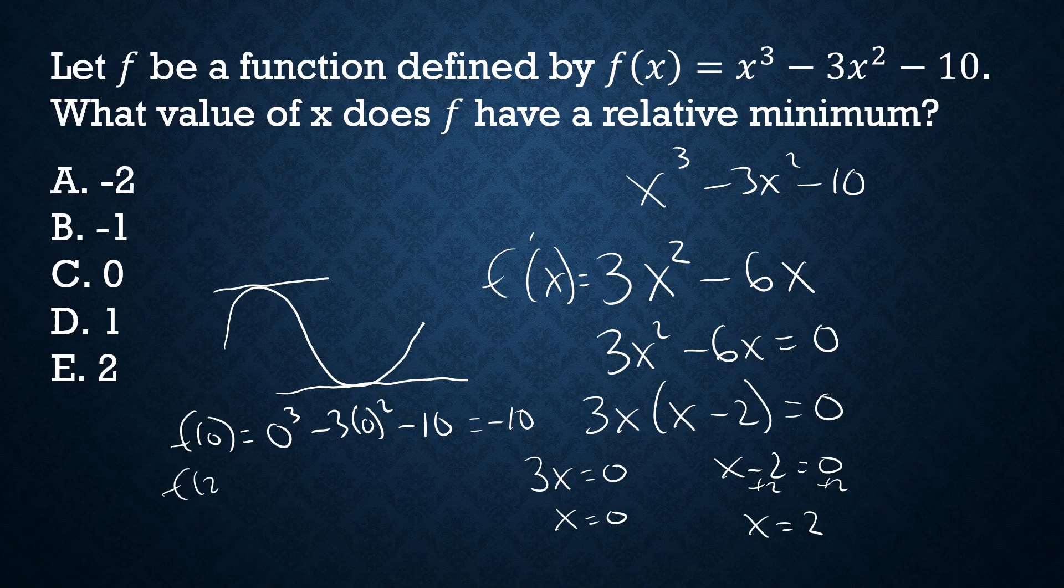So f of 2 will be 2 to the third minus 3 times 2 squared minus 10. That's going to be 8. 2 squared is 4, 4 times 3 is 12, so minus 12 minus 10. That's going to equal negative 14.